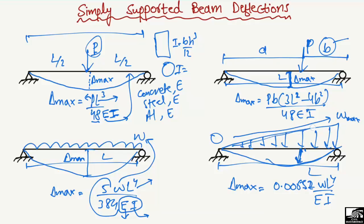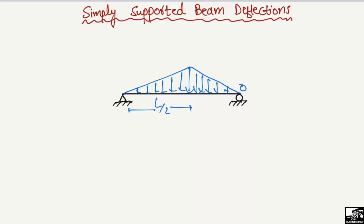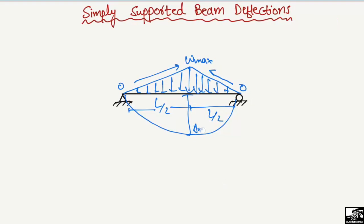The fifth case is when there is a symmetric double triangular load: one triangular load increasing from zero to a maximum over the first half L/2, and another triangular load increasing from zero to a maximum over the second half L/2. The maximum deflection occurs at mid-span and is given by: δ_max = WL⁴ / (120EI), where W is the load intensity and EI is the beam stiffness.